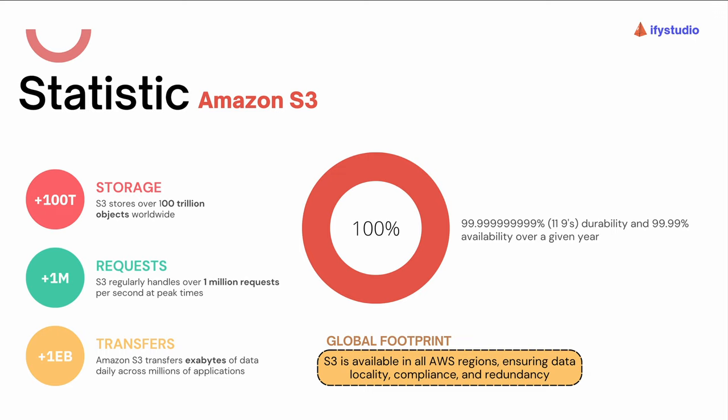One exabyte is a thousand petabytes, and we are talking more than one exabyte of data daily across millions of applications — that's the power of S3 as a secure cloud storage option for any workloads you are running or as part of any application. On the right-hand side you can see a metric showing the durability and availability rate of S3. AWS claims that whatever happens, your data is secure with S3. Your data is backed up and replicated into various AZs, or availability zones, so even if one availability zone is down, you can still access your data from another.